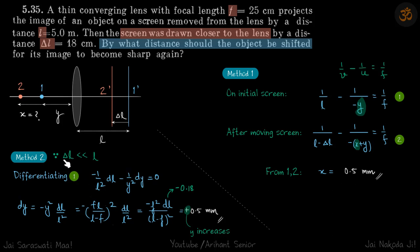We can do in this method because delta l is much less than l. Delta l is 18 centimeters, which is quite small compared to 5 meters, so it's like 25 times smaller. So we can use this approximation, and we'll make use of this approximation by differentiating the first equation, so that we get a relation between delta l and delta y, and delta l is given to us, and delta y is x.